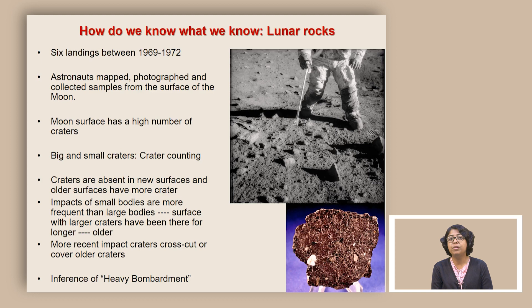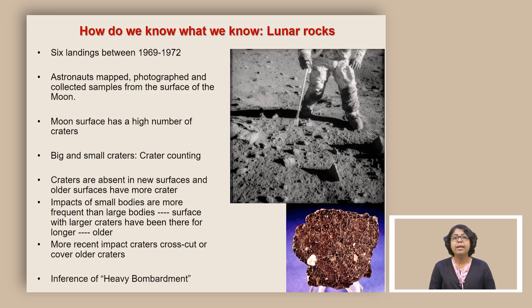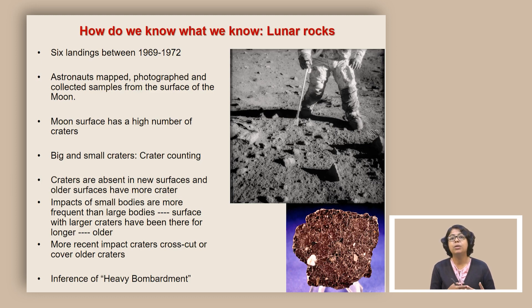A very important source of information in understanding the history of the solar system as well as the early phase of development of planets comes from the lunar rocks. There were six landings between 1969 and 1972 as part of the Apollo mission, where astronauts landed on the moon, mapped, photographed, and collected samples from the surface. All of this is extremely valuable information to understand the early history of the earth, because the moon and the earth share similar location with respect to the sun and similar history in terms of formation, and so we can use the moon to understand early earth's history.